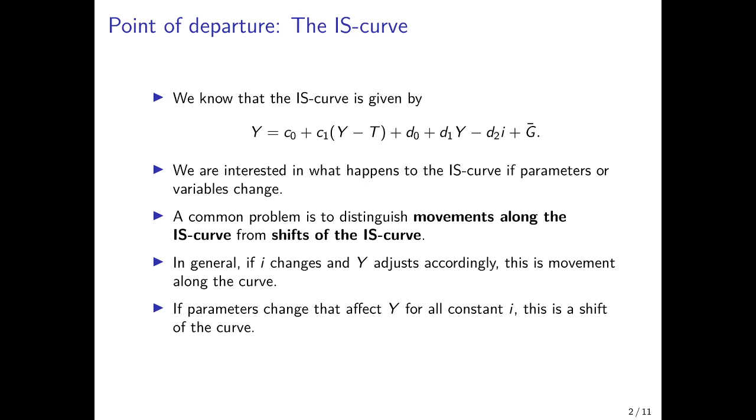The common problem is to distinguish movements along the curve from shifts of the curve. In general, if the interest rate changes and income output adjusts accordingly, this is a movement along the curve. But if parameters change that affect income or output for all constant interest rates, this is a shift of the curve.